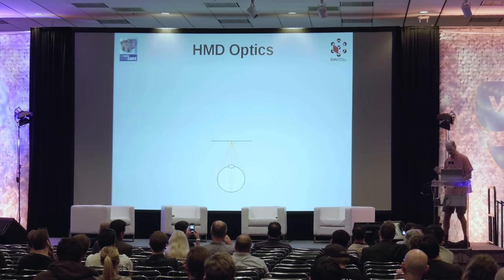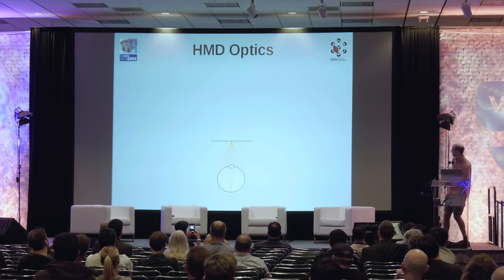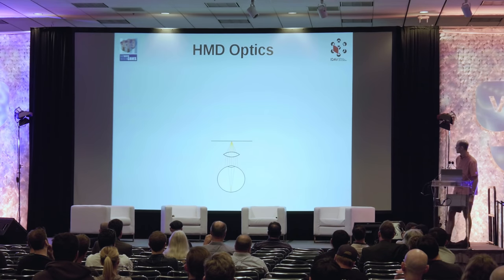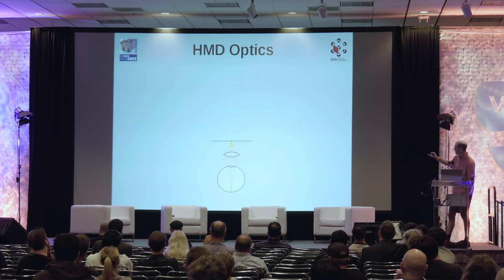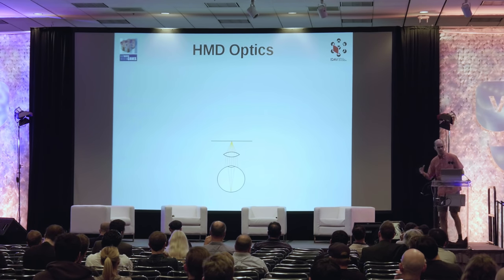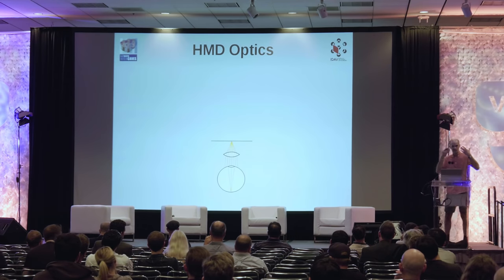When the screen is very close, the light diverges so much that even at full contraction the lens cannot bend those rays enough — they converge on a little disc, giving a blurry image, which is painful. The solution is to put another lens between the screen and the eye, which bends those rays a bit so the eye can relax and focus them properly. That's the whole reason why there are lenses in head-mounted displays.